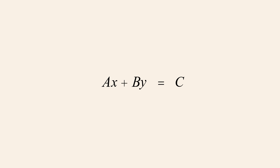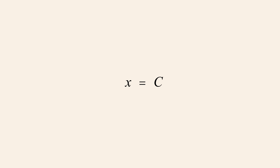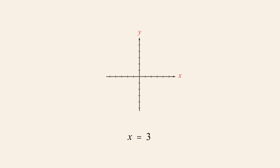Likewise, setting b to zero and a to one eliminates y from the equation. If once again we set c to three, we get the linear equation x equals three. Now since y is free to take on any value, the graph of this equation consists of every point whose x-coordinate is three and y-coordinate is any real number. The graph of this equation is therefore a vertical line three units to the right of the origin.